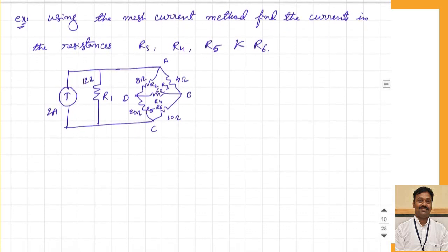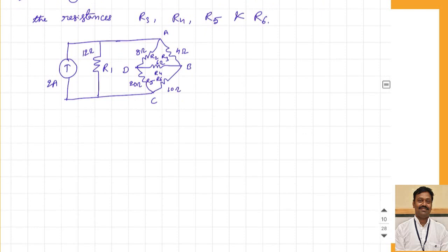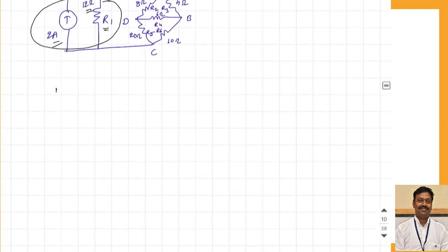Let us take another example: using the mesh current method, find the currents in resistances R3, R4, R5, and R6. The circuit has a 2 amperes current source in parallel with a 12 ohm resistance. We do source conversion: voltage equals I times R_sh equals 2 times 12 equals 24 volts, giving a voltage source of 24 volts in series with the 12 ohm resistance R1.